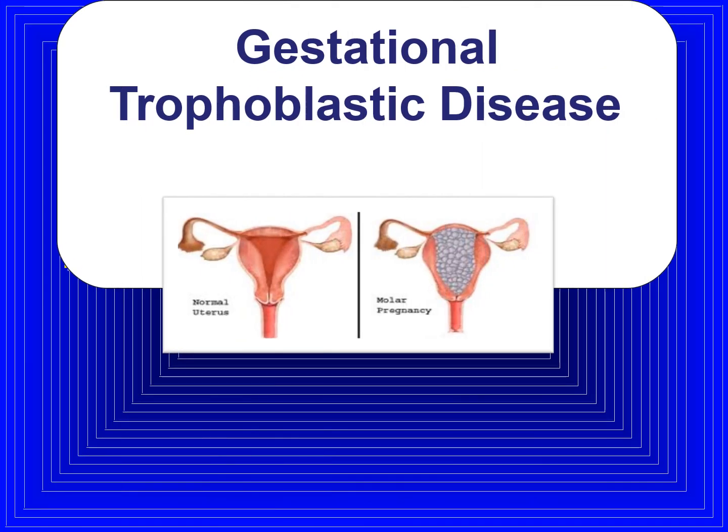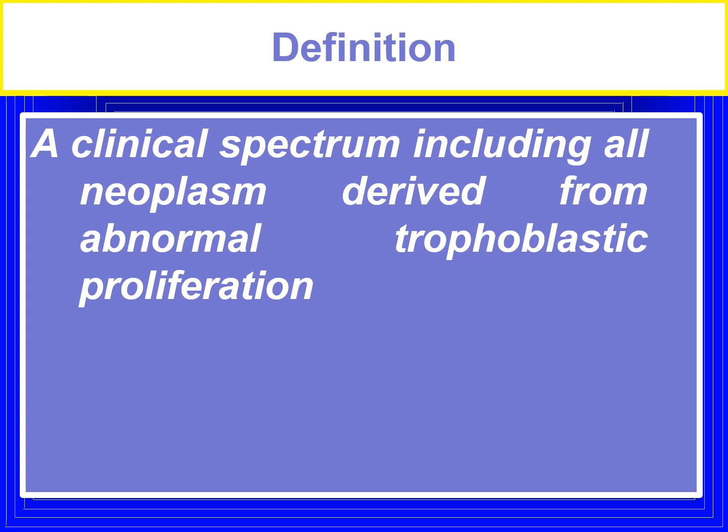Welcome back to obstetrics and gynecology videos. Today we are going to see about gestational trophoblastic diseases; mainly we are discussing about the hydatidiform mole. Gestational trophoblastic disease is a clinical spectrum including all neoplasms derived from abnormal trophoblastic proliferation. The trophoblast is a layer of the placenta, and initially the placenta develops from the trophoblast.